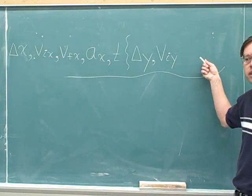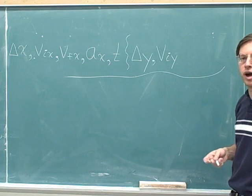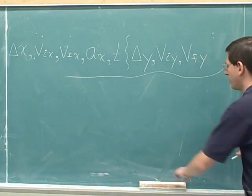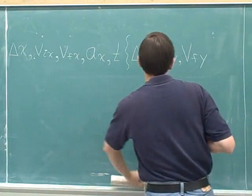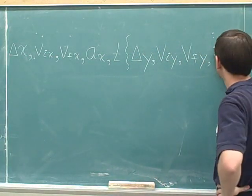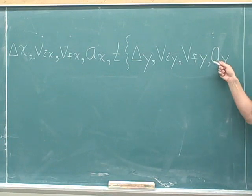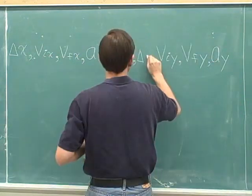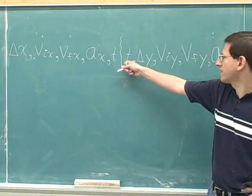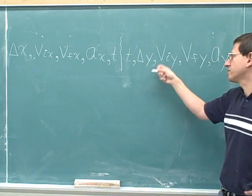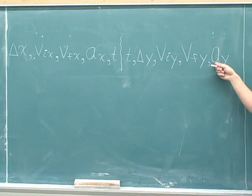Pause the video and try to write down the other three variables in the y component. The next ones are: the final y velocity, a sub y — that's the y component of the acceleration — and time. So now we have the five y variables: time, the y displacement, the initial y velocity, the final y velocity, and the y component of acceleration.